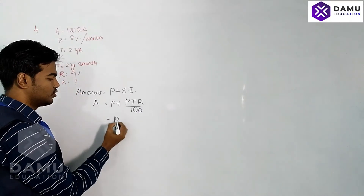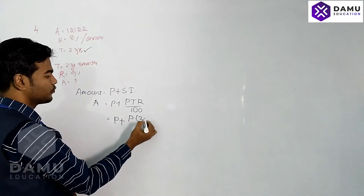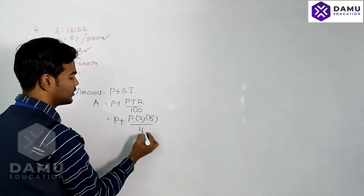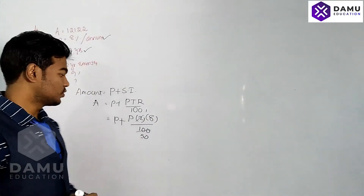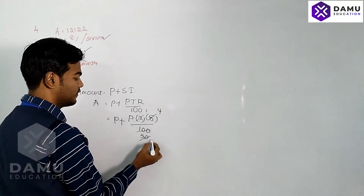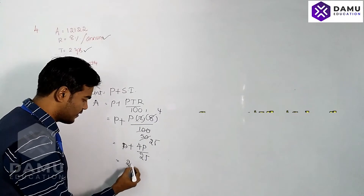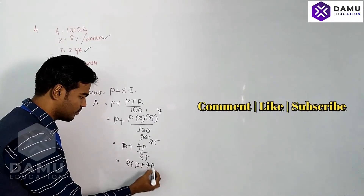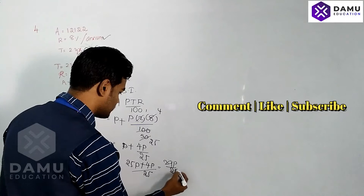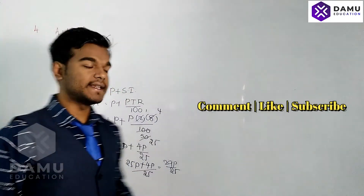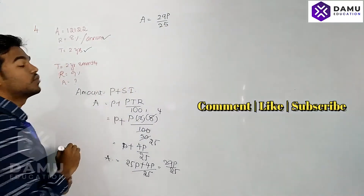What is given: Principal is unknown, keep it as P. Time duration is two years. Rate of interest is 8 per hundred. So Amount = P + PTR/100 = P + P×2×8/100. Simplifying: Amount = 25P/25 + 4P/25 = 29P/25.